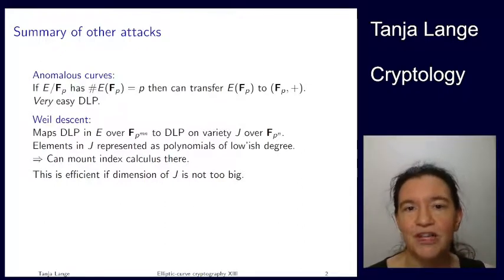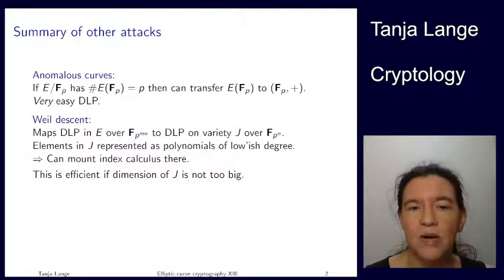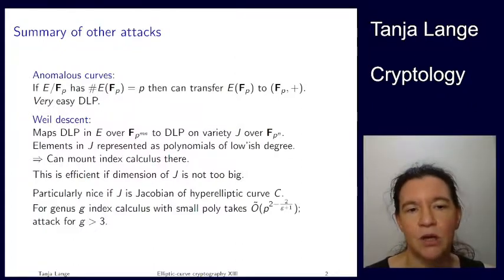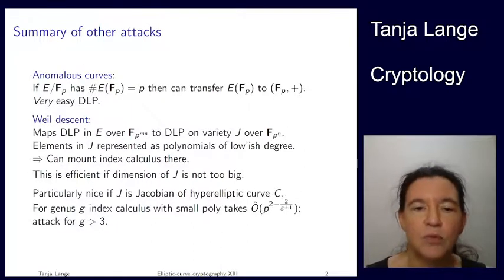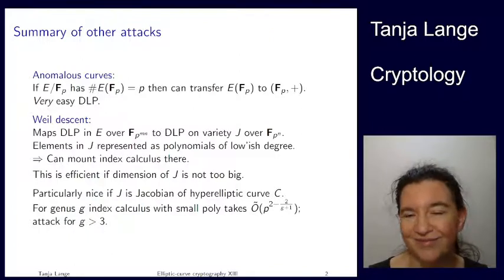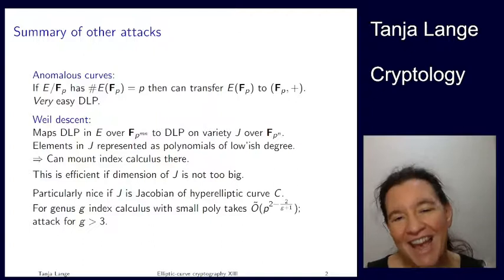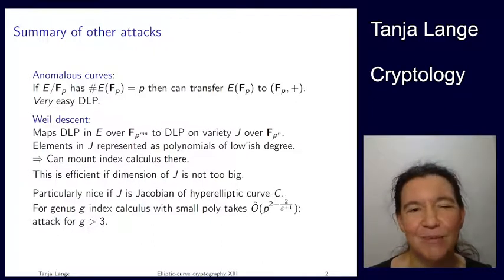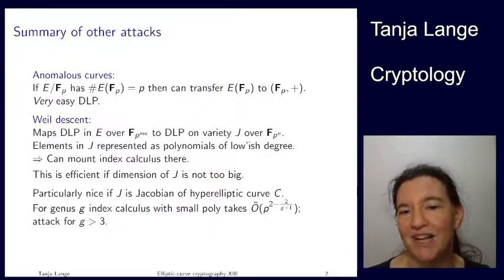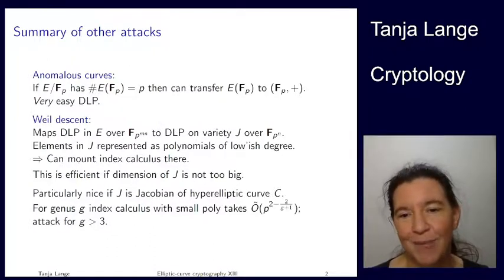Now, if you're an attacker, you want to actually push this to something where you can attack better. The arithmetic and also the index calculus gets most powerful if this J is the Jacobian of a hyperelliptic curve. Given that my domain name is hyperelliptic dot org, I had to show you something about hyperelliptic curves. That's the deeper reason for having Weil descent in this course. Don't worry, it's not going to be on the exam, but I at least want to show you the word hyperelliptic in this course.